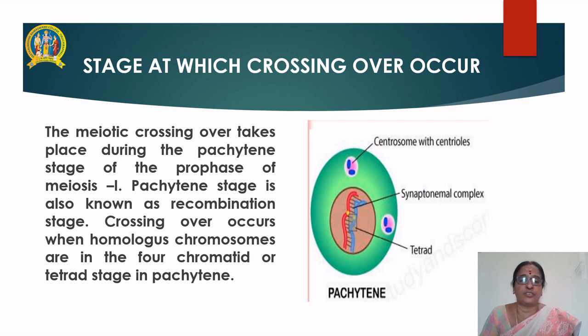Crossing over occurs when homologous chromosomes are in the four-chromatid or tetrad stage in the pachytene stage. This is the structure of the pachytene stage, where you see the synaptonemal complex, tetrad formation, and centromere with the centrosome and centrioles.